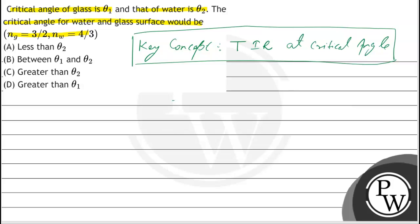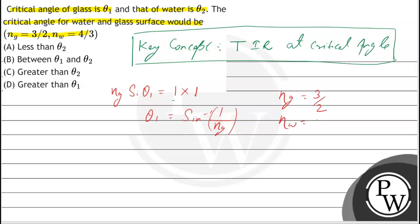Now we will apply Snell's law. We write the glass-air interface: mu_glass × sin(theta_1) = mu_air × sin(90°). Since mu for air is 1 and sin(90°) = 1, we get theta_1 = sin⁻¹(1 / mu_glass). Given mu_glass = 3/2, therefore theta_1 = sin⁻¹(2/3).